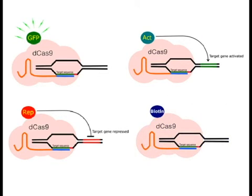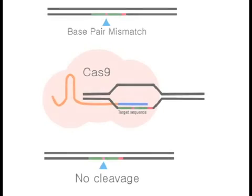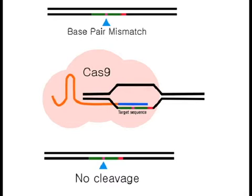We also offer a biotinylated dCas9 for use in downstream applications such as enrichment and visualization. The HiFi variants of Cas9 have been produced by MCLAB to provide high-fidelity binding of Cas9 to the targeted genomic DNA sequence. This helps ensure that Cas9 cleavage is always on target and reduces genome-wide off-target effects. Both HiFi Cas9 variants ensure that DNA cleavage will only occur if the genomic DNA sequence exactly matches the crRNA, allowing for unrivaled accuracy in genome editing experiments.